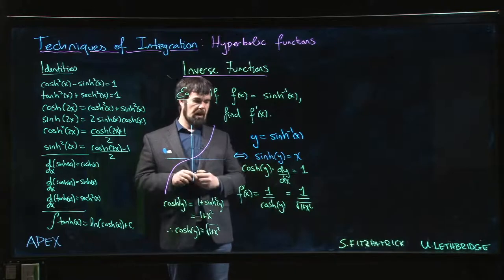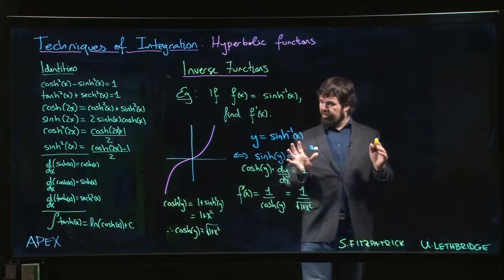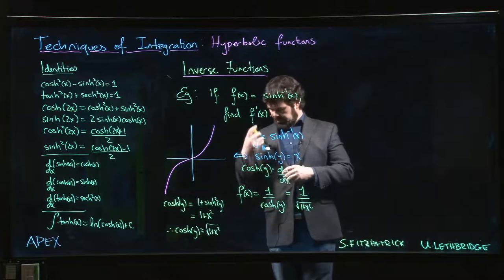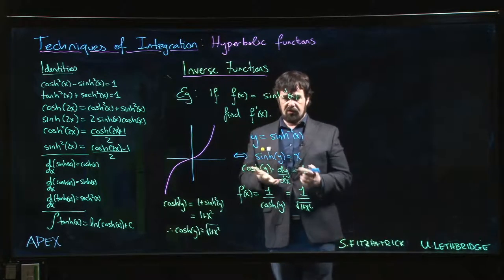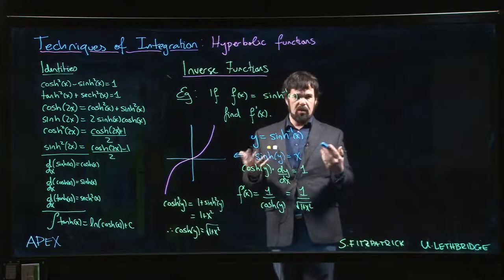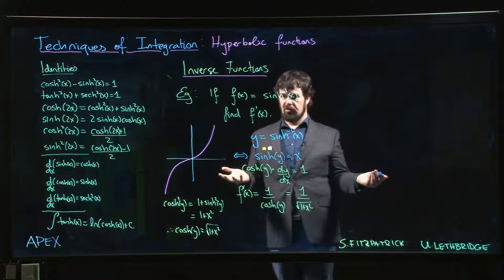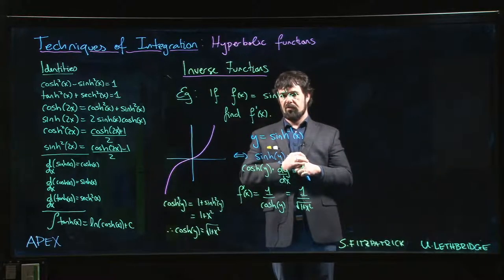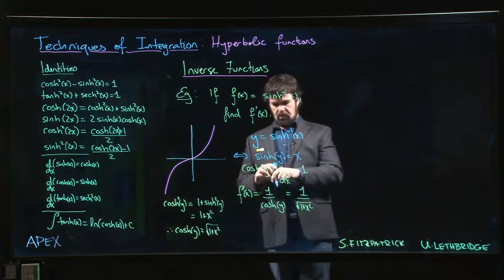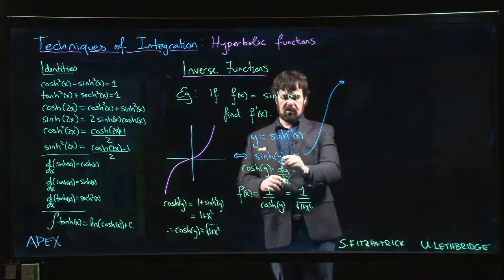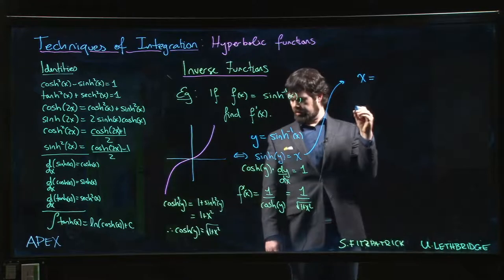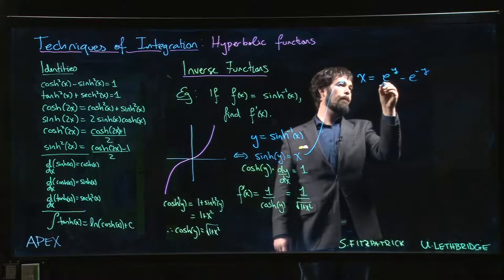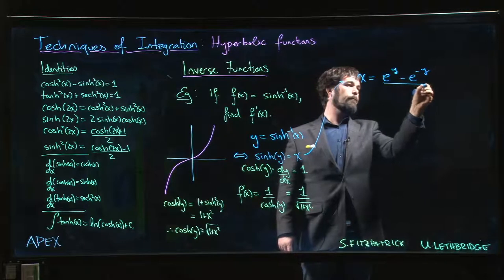There's another approach, which is quite interesting and is only available for hyperbolic trig functions — not for regular trig functions, since trig functions are defined in terms of the circle and can't be expressed using other elementary functions. Hyperbolic trig functions are defined in terms of exponentials, so from sinh(y) = x we can write: x = (e^y − e^(−y)) / 2.